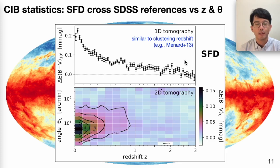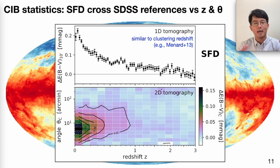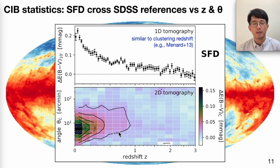The bottom panel shows a 2D tomography. Here I use a lower redshift resolution, but additionally scan over a range of angular scales. The estimator is a compensated filter — the excess extinction in the inner disk minus that in the outer ring — which is more robust against contaminating foreground. You can see that the CIB signal is detected up to roughly redshift 3, and the amplitude of the CIB is stronger at low redshift. This is of course only in 100 microns. The angular extent of the CIB clustering effect is detected up to about 10 degrees.